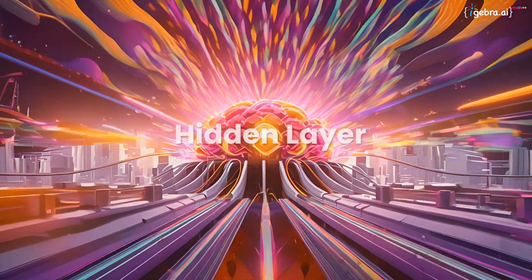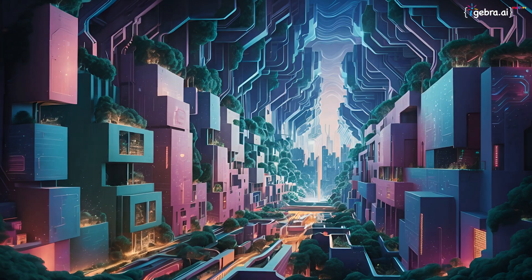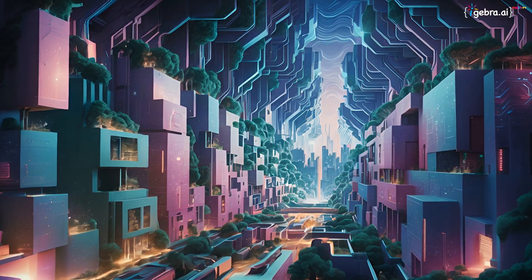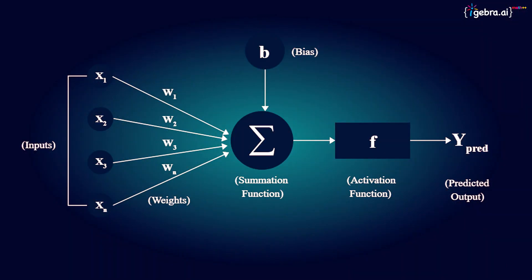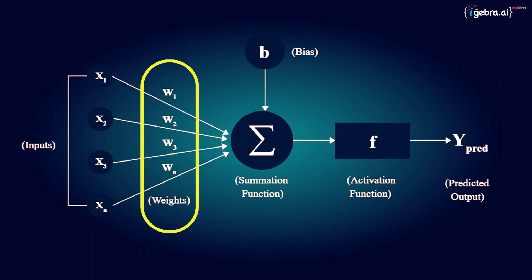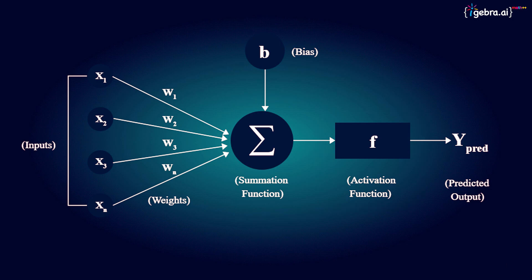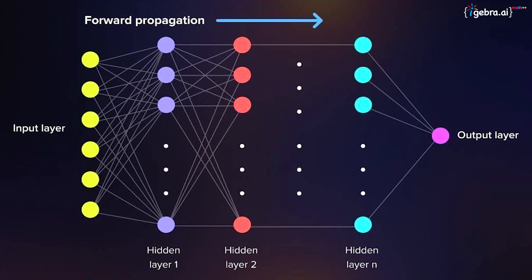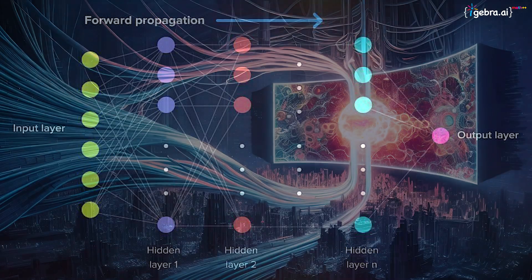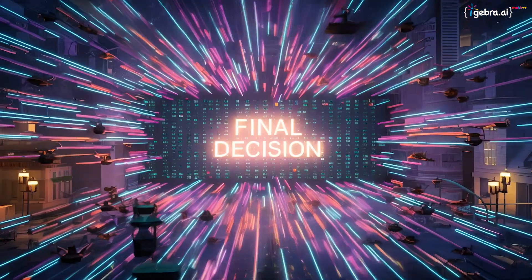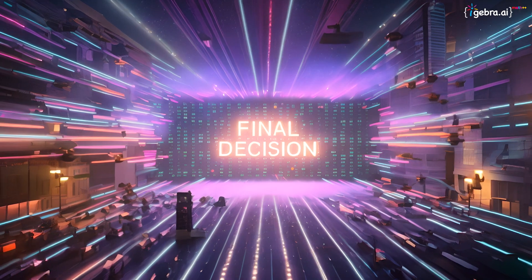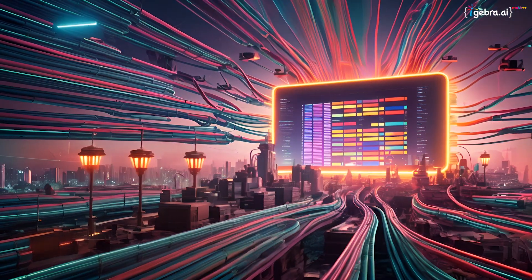Once inside, the data travels through hidden layers. These are like the back streets of our city, filled with numerous buildings where our data gets mixed, matched, and transformed. Each building adjusts the information using weights and biases, crucial tools that help decide the importance of incoming data. Each piece of data then goes through an activation function, kind of like a checkpoint that decides how much of the data should continue on. This process is known as propagation, where information flows forward from one layer to the next. After traveling through the hidden layers, our data reaches the output layer. Here, the final decision is made, like answering a question or recognizing a face in a photo. This is our destination.